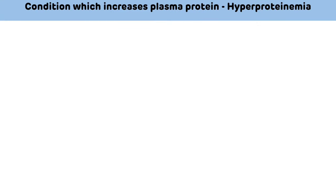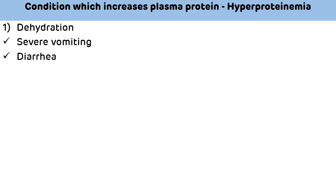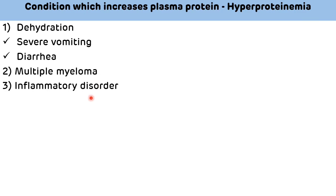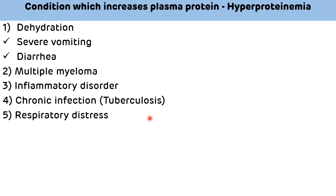Conditions that increase plasma protein — hyperproteinemia. Causes: first, dehydration due to severe vomiting and diarrhea, which leads to hemoconcentration from decreased plasma volume. Second cause is multiple myeloma. Third is inflammatory disorders. Fourth is chronic infections like tuberculosis, respiratory distress, and hemolysis. Remember, dehydration leads to hemoconcentration, which causes decreased plasma volume, resulting in hyperproteinemia.